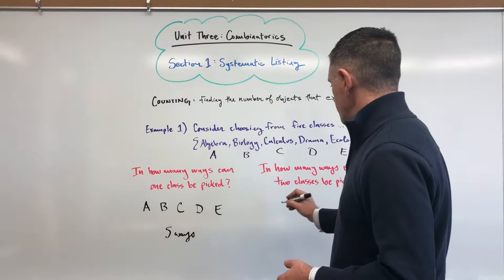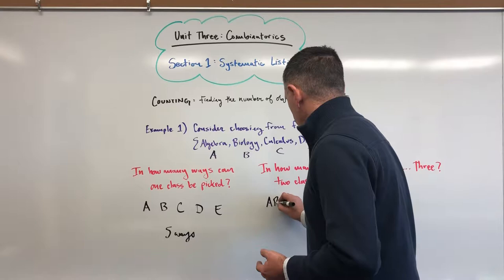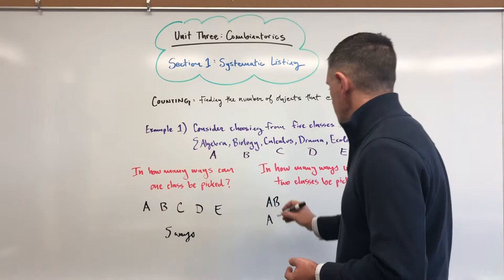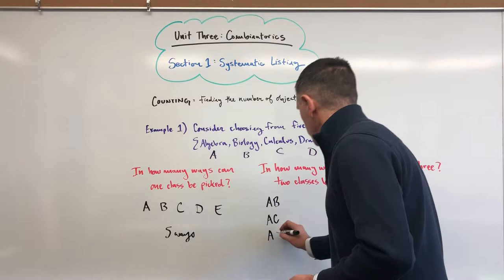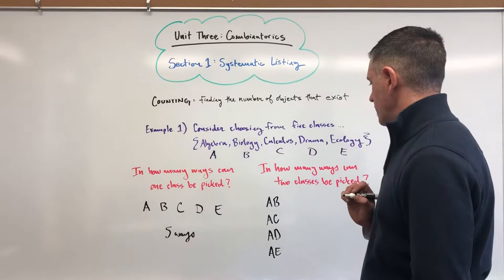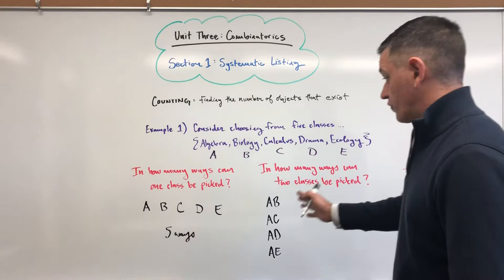So let's say we pick Algebra as our first class. We then have the option to pick Biology, so AB would be one of the options. We could still pick Algebra as the first class and then take Calculus, or we could do Algebra followed by Drama, or we could do Algebra and Ecology. So it looks like there's four different ways that we could take our Algebra class.